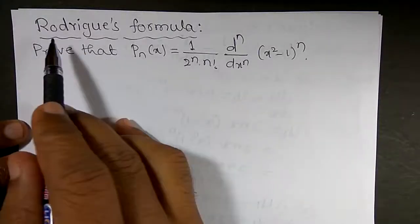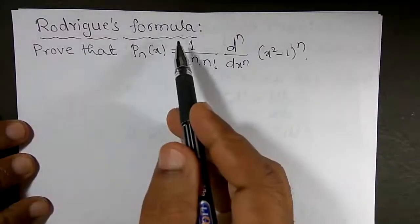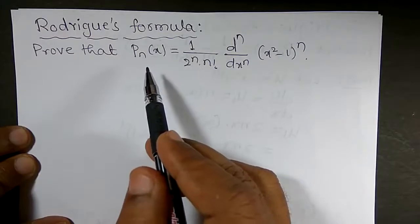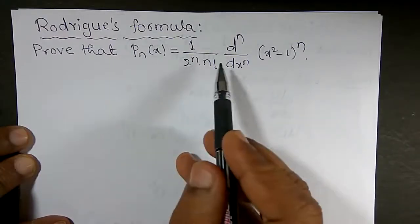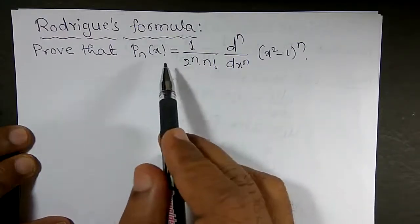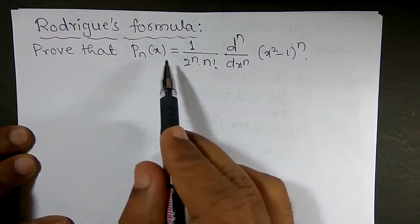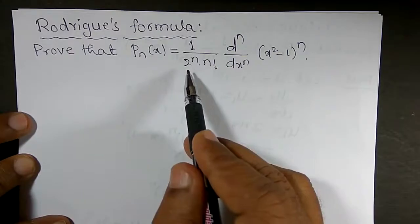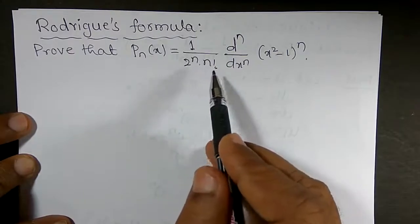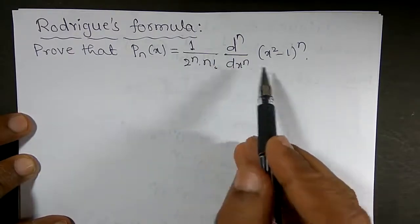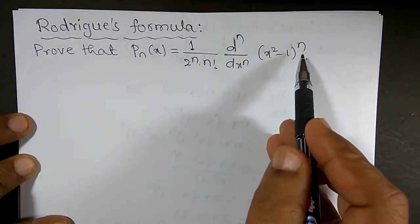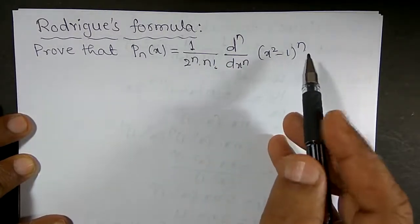Hello friends. Now I want to prove Rodrigues' formula. What is Rodrigues' formula? The left hand side is equal to the right hand side, or I can say that Pₙ(x) is equal to 1 divided by 2 to the power n into n factorial, times the nth derivative of x squared minus 1 to the power n.